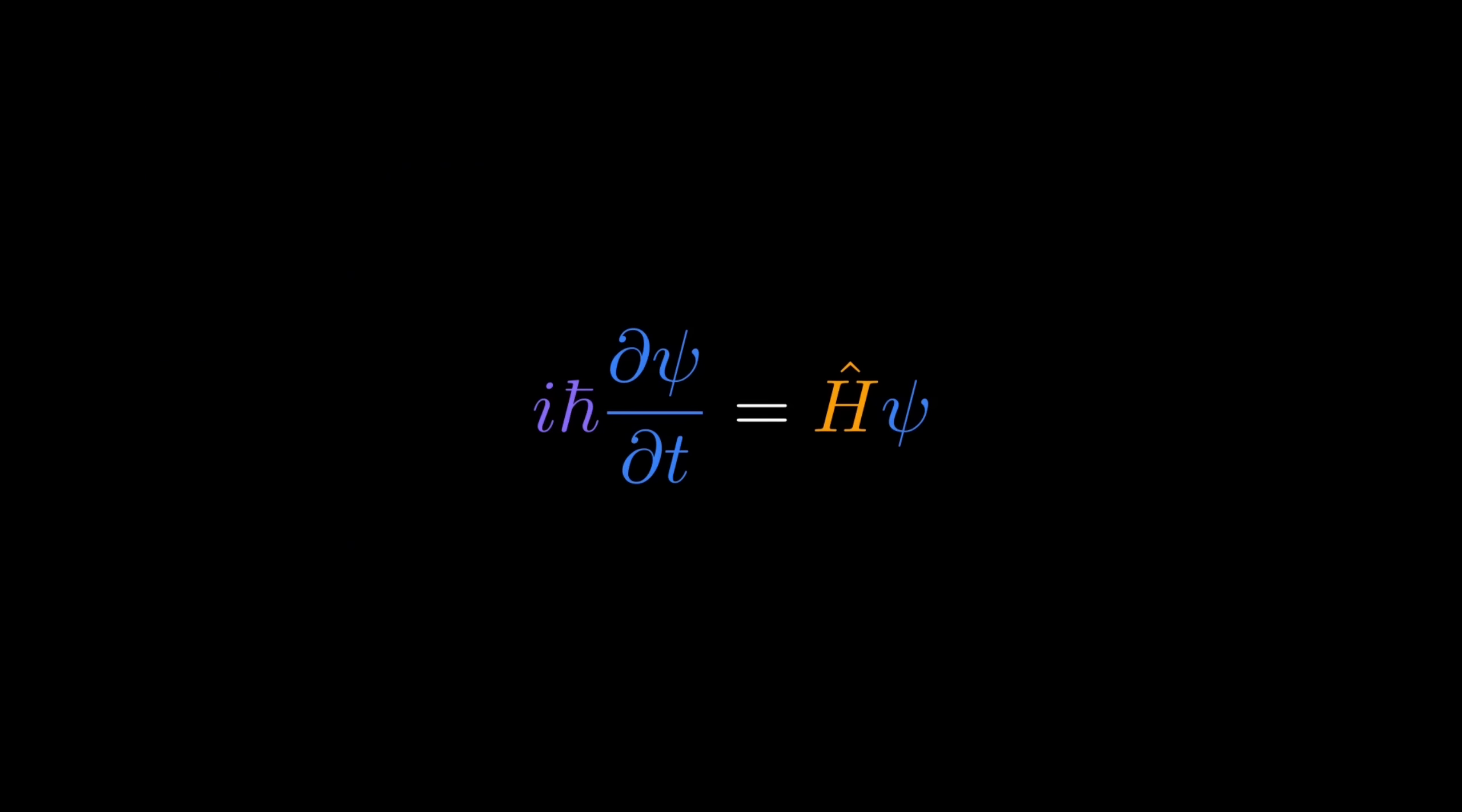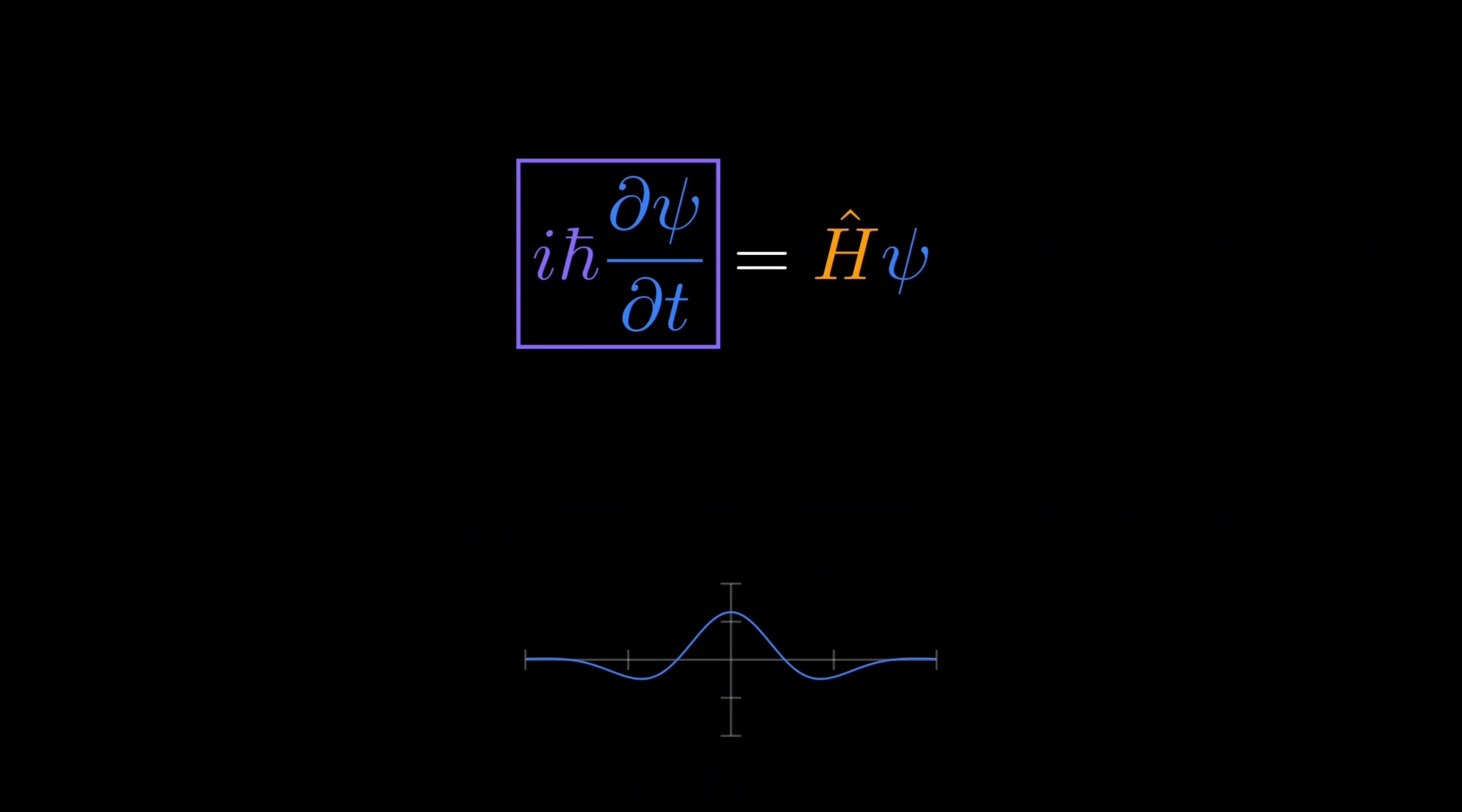Now we can finally look at Schrödinger's equation itself. It tells us how this wave function changes over time. On the left side, we have i h-bar times the partial derivative of psi with respect to time. On the right side, we have the Hamiltonian operator acting on psi. Let's break down what each part means.